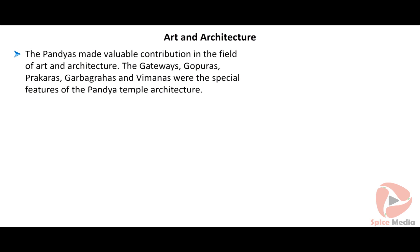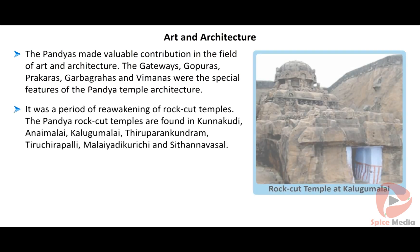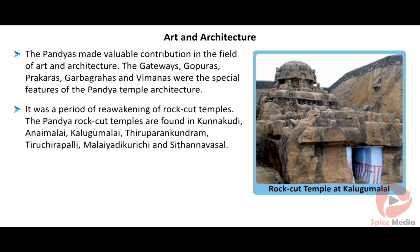The Pandya kings encouraged the growth of literature. Some of the famous literary works of this period are Thiru Vasagam written by Manika Vasagar, Thiru Pavei written by Andal, Thiru Pallandu written by Nam Malwar, Mahabharata written by Vili Putrar, Naidhadam written by Adhi Veera Rama Pandya, and Sayur Murugam Ulla and Rathingiri Ulla written by Shri Kaviraya.